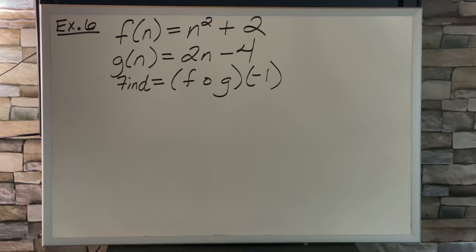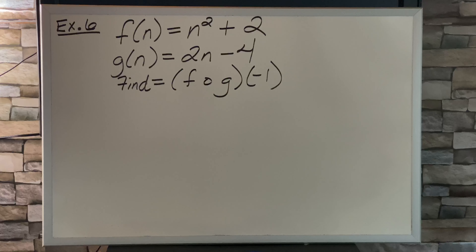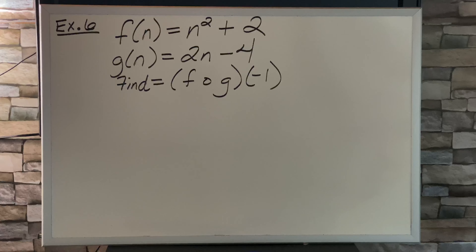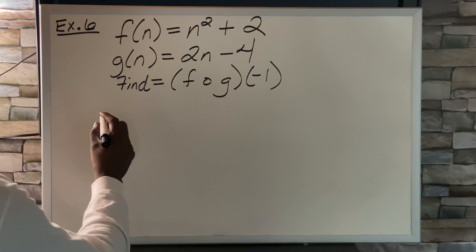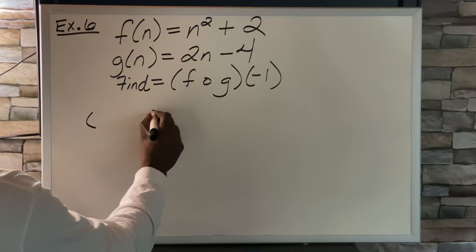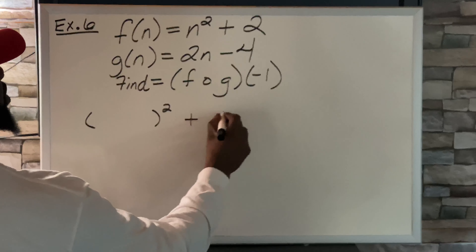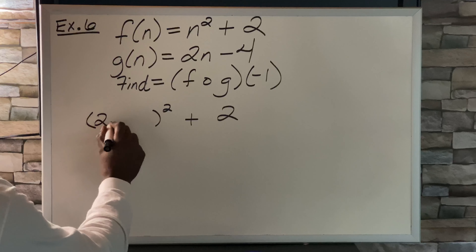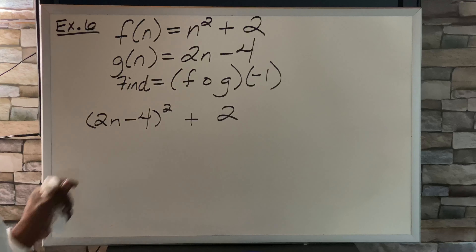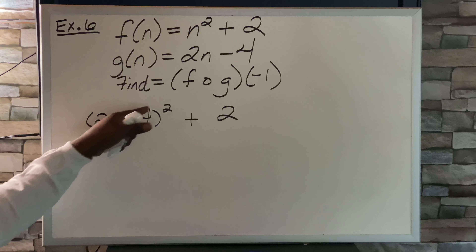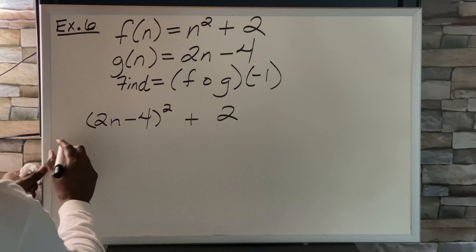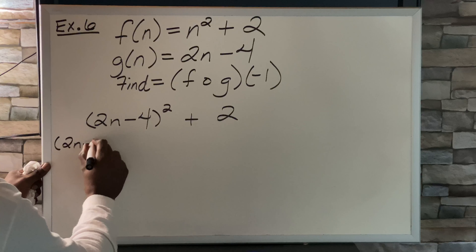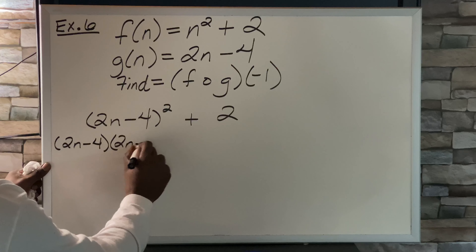Example 6: f of n equals n squared plus 2, g of n equals 2n minus 4. Find f of g of negative 1. F of n is our base, so we have n squared plus 2, and 2n minus 4 goes inside. So we get 2n minus 4, squared, plus 2. Squaring the binomial means multiplying 2n minus 4 times 2n minus 4.